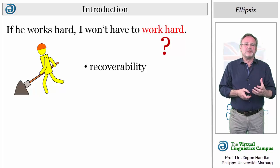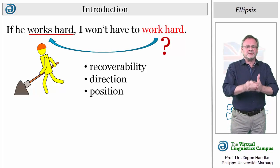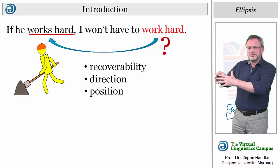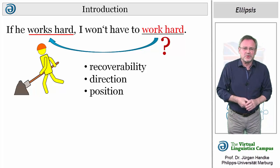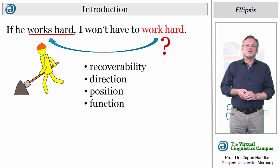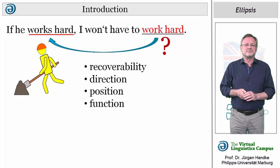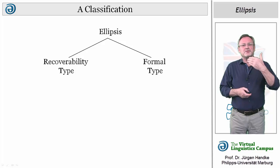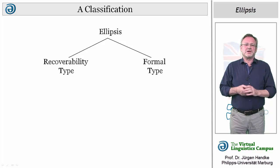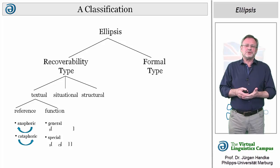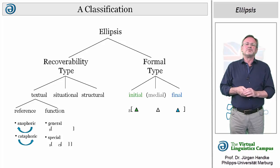Another parameter is more formal. It looks at the position of the ellipsted elements and their direction of reference. Here, we have a backward direction. Last but not least, we can define a functional parameter that looks at the relationship between the antecedent and the ellipsted part. The two main types — the recoverability type and the formal type — can be associated with several subcategories, with further categories that may even be beyond the linguistic context, or with categories that simply refer to the position of the ellipsted elements within the sentence.